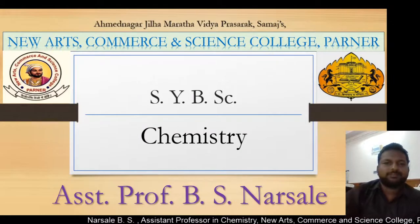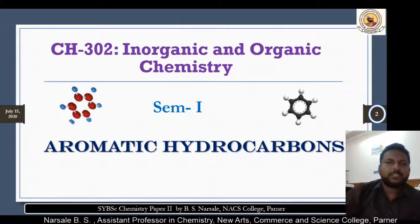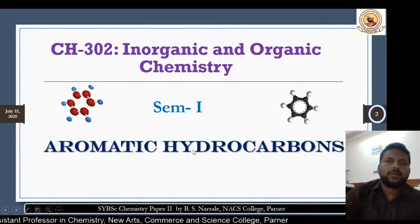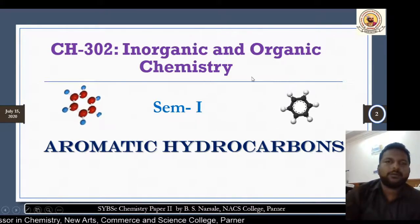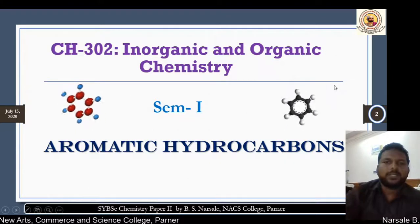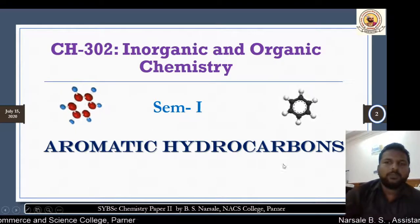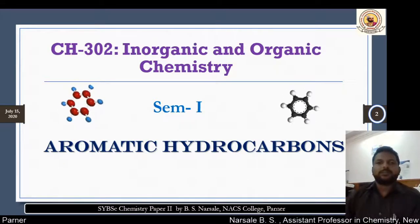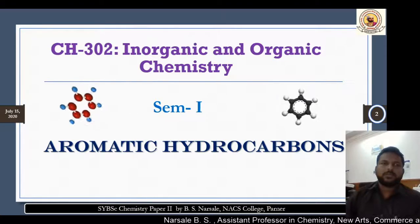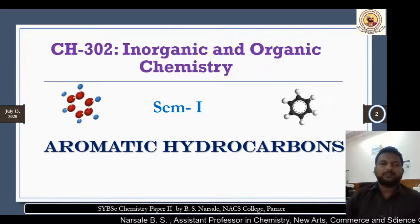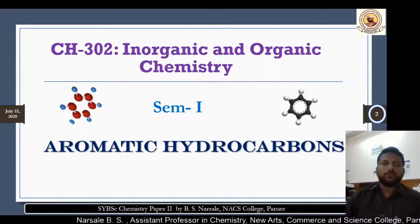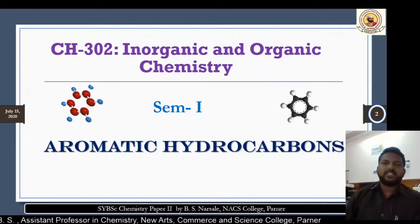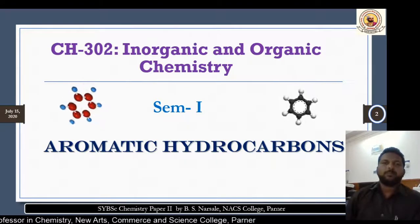Welcome friends. Here we are discussing the aromatic hydrocarbon chapter of semester 1, covering inorganic and organic chemistry. After the last lecture, we will learn about what is meant by aromatic hydrocarbons, the criteria for aromaticity, nomenclature of the aromatic system, monosubstituted benzene, disubstituted and polysubstituted benzene.